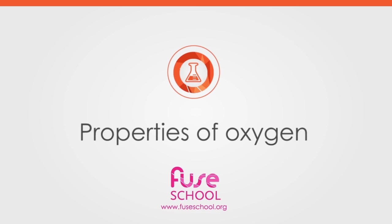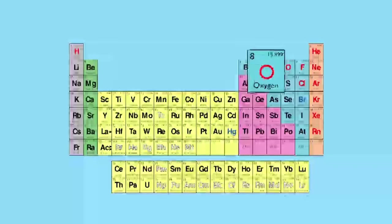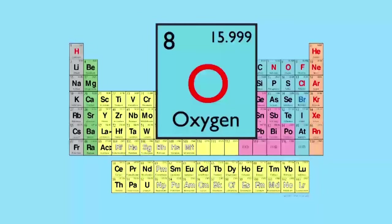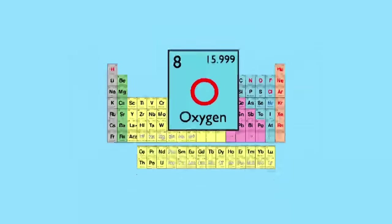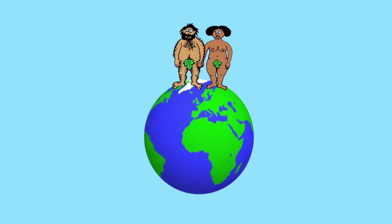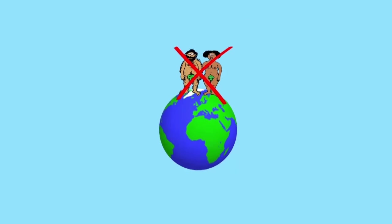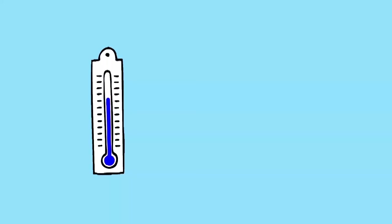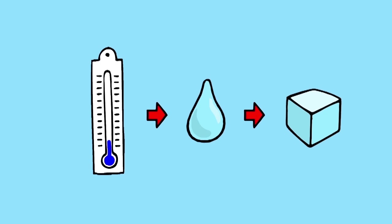In this video we're going to investigate the properties of oxygen. Oxygen has atomic number eight and is found in group 16 of the periodic table. It has the chemical symbol O. Oxygen is of course a gas. It has no smell, colour or taste, but without it we as humans would not be able to inhabit planet Earth. When cooled to very low temperatures it will form a liquid and a solid which are both pale blue.